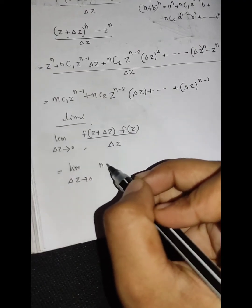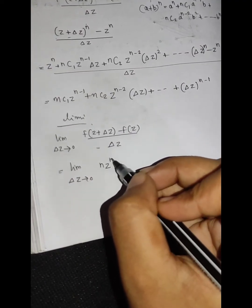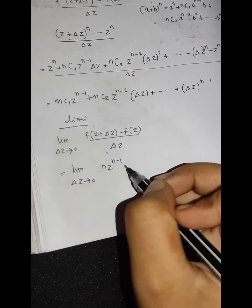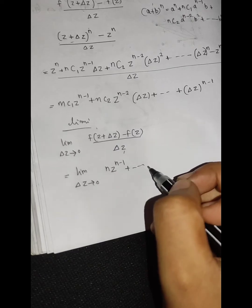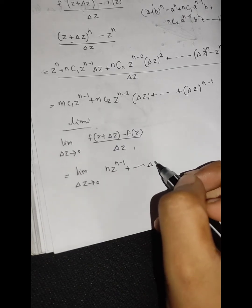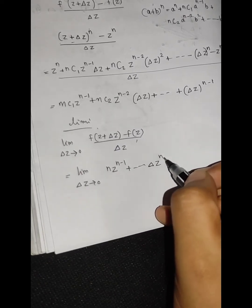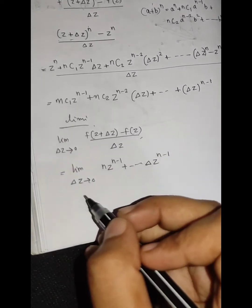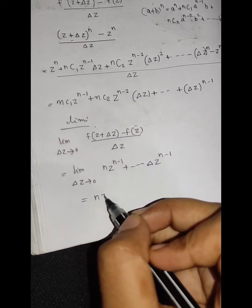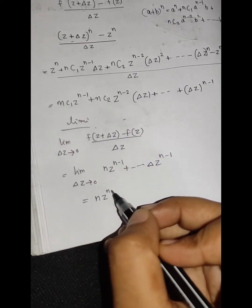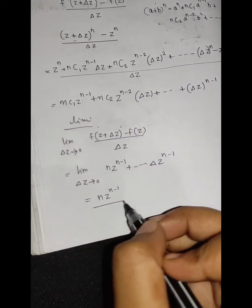Let's say nz raised to n minus 1. x is delta z raised to n minus 1. So this answer is nz raised to n minus 1.